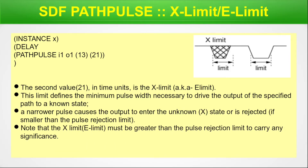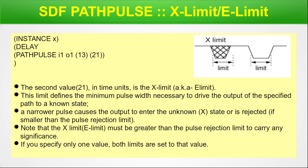Note that the x-limit, also known as e-limit, must be greater than the pulse rejection limit to carry any significance. Here you can see 21 is greater than 13. This numerical difference should be present when these two limits are set. If you specify only one value, both limits are set to that value — meaning if only 13 is used, it applies to both the pulse rejection limit and the e-limit.